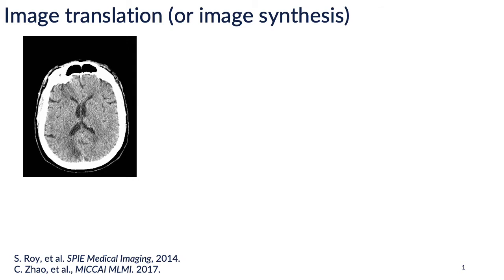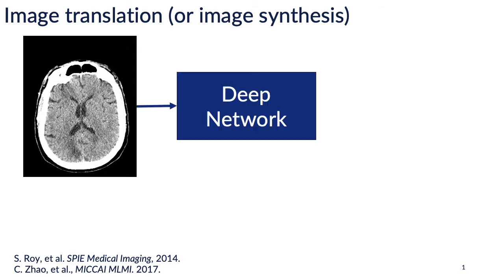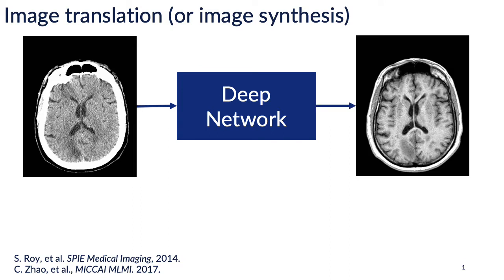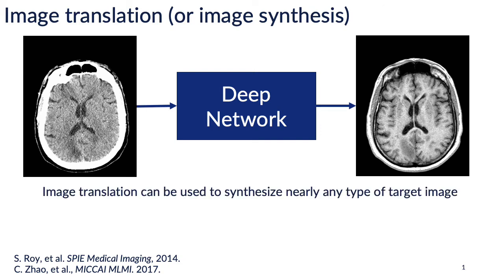Image translation involves taking a structural image like the CT image on the left, putting it through a deep network or some other machine learning model, and outputting another type of structural image like the MR image on the right. We explore CT to MR image translation in this work; however, the uncertainty measurements we explore are not specific to this task. Image translation can be used with nearly any set of source and target images and has many use cases.